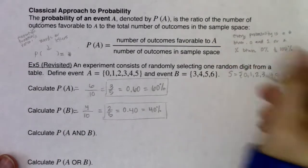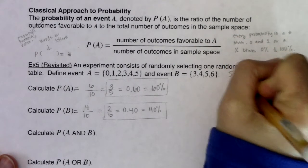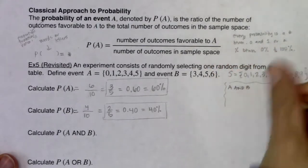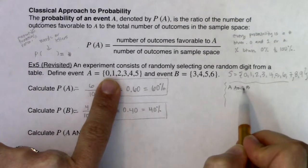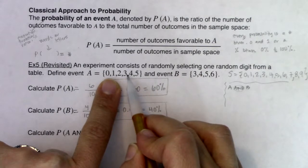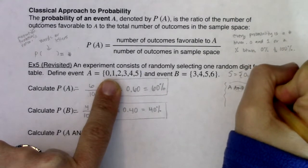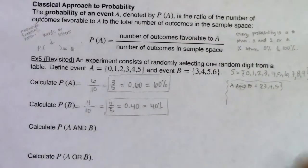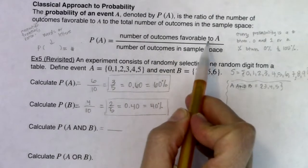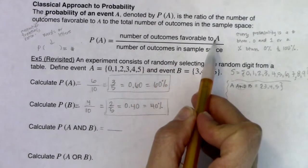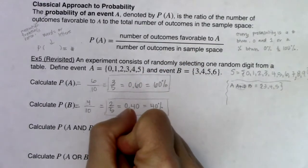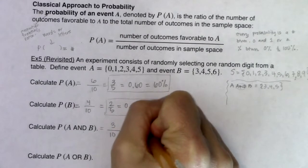For A and B — 'and' is looking for the overlap between the two lists. The overlap was just 3, 4, 5, which was common to both events. So the probability of A and B is a fraction: the number of outcomes favorable to A and B is three, and the number of outcomes in the sample space is still ten. So the answer is 0.30 or 30%.